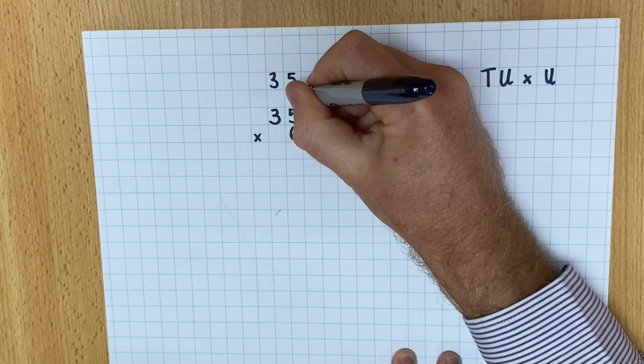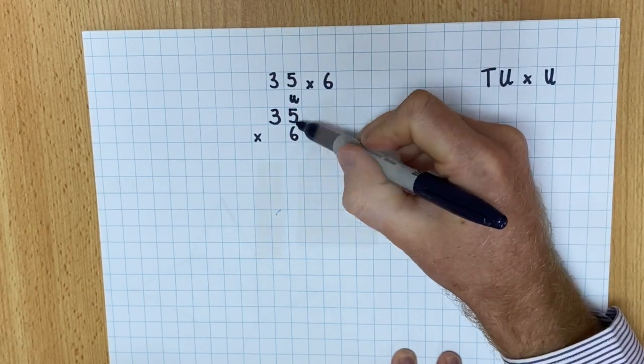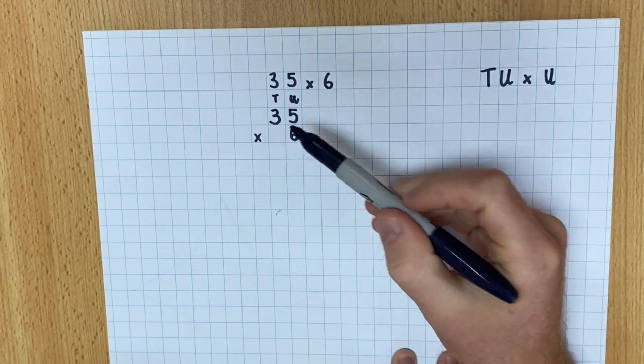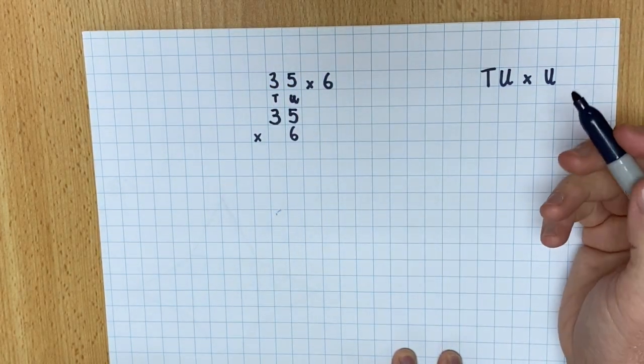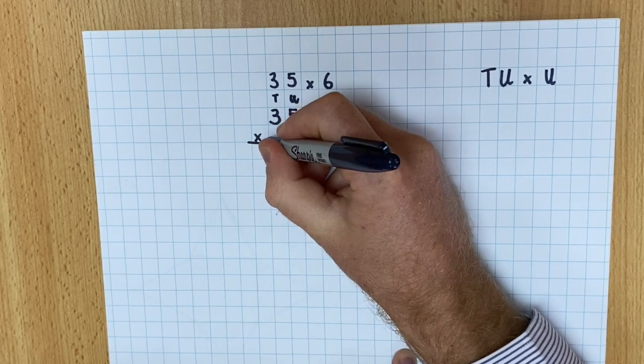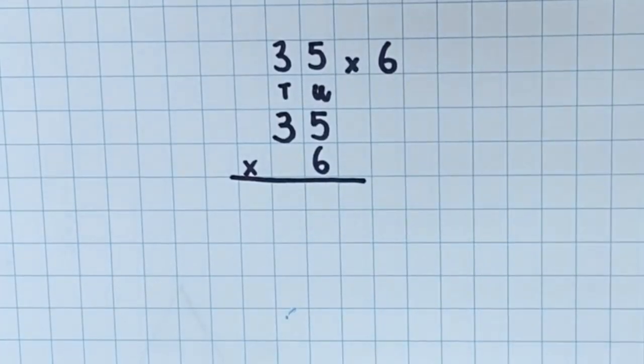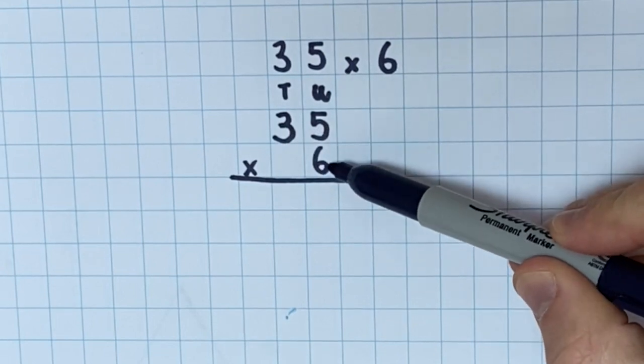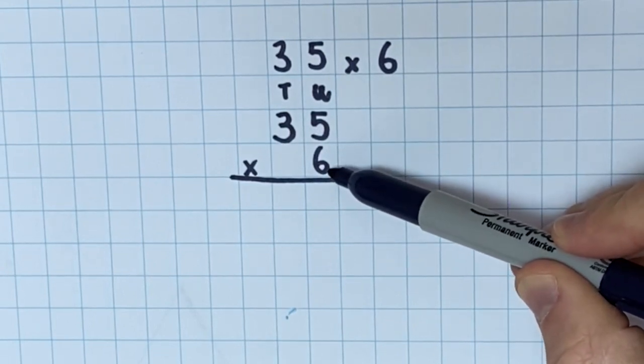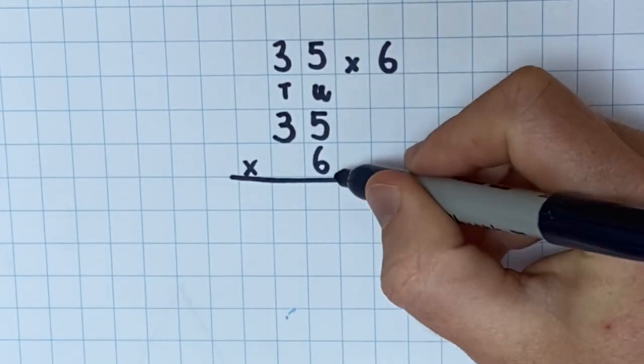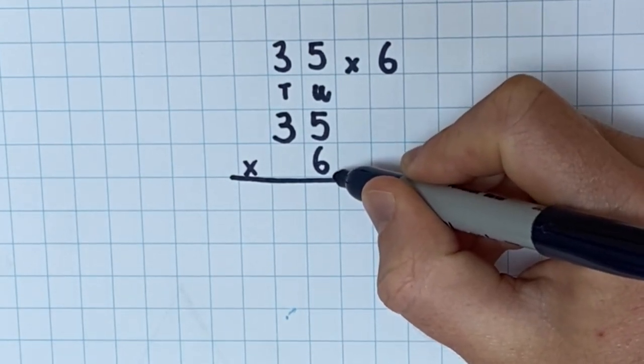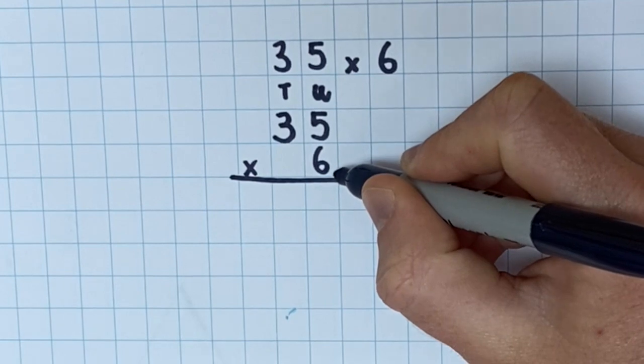Notice that my units column, the 5 and the 6 match up and then in the tens column, the 3 is on its own or the 30 is on its own. Now, both the 3 and the 5 must be multiplied by 6 to get the correct answer. So what I do is I put little dots next to each number so I know I've multiplied that number.